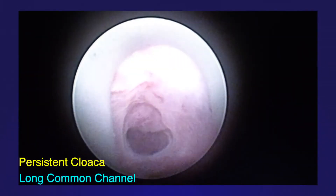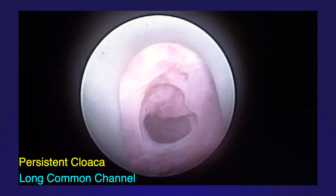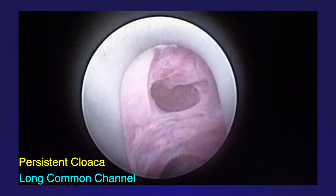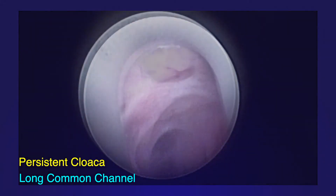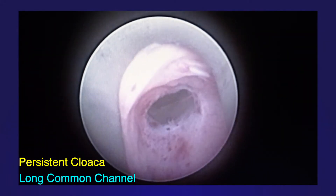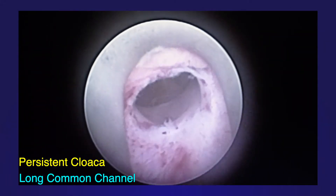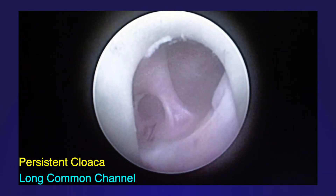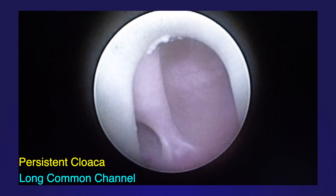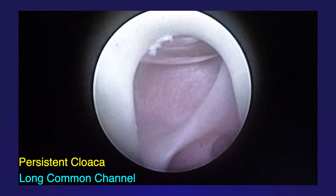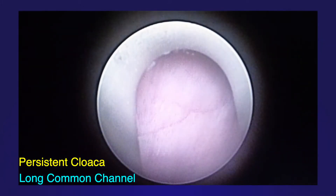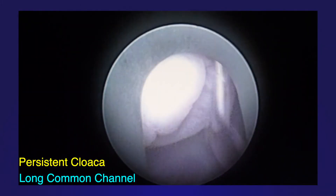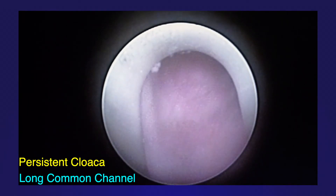This video shows an endoscopy of a long common channel. The first bifurcation is seen approximately 3 centimeters from the perineum. The common channel continues proximally and a trifurcation is seen another 3 centimeters more proximal to the first bifurcation. The trifurcation is formed by two hemivaginas anteriorly and the rectum posteriorly.